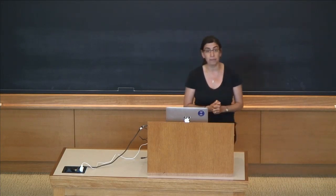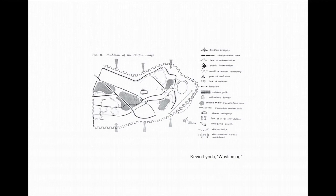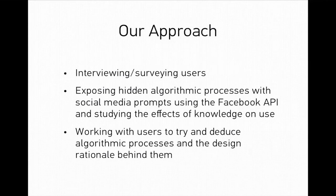There is some precedent for this. Kevin Lynch studied invisible processes in support of design — in the mid-1900s he did way-finding studies exploring how individuals perceive and navigate the urban landscape, looking at what about a city allows easier perception and more accurate mental maps for the dweller. His work was incorporated into practice for better urban design. We borrowed from him, and the approach we came up with was an interview-survey approach similar to what Lynch did. We then created something we're calling a prompt that exposes some of these hidden algorithms to users using the Facebook API.